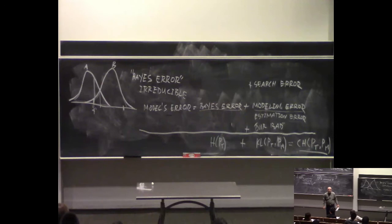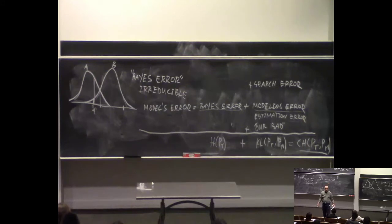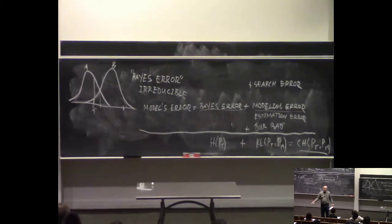Modeling error and Bayes error are hard to tell apart because you don't know the truth. When the entropy can be zero? Perfectly separable classes is an example of Bayes error being zero. In terms of entropy language, the entropy of the label conditioned on the input is zero.